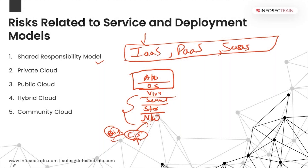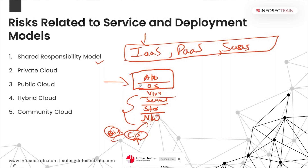The good news is that most of the existing governance and risk management activities that any organization has already built are directly transferable to infrastructure as a service. Although the underlying infrastructure like HVAC, network power is the cloud service provider's responsibility, the same governance and risk management issues remain — exposure of the system to different changes or networks — so those processes are still very much similar.